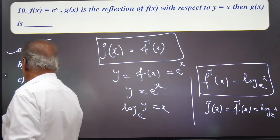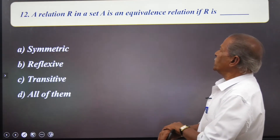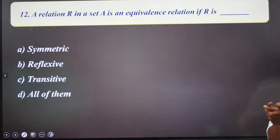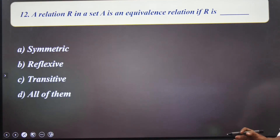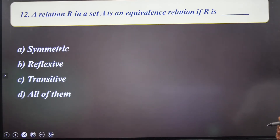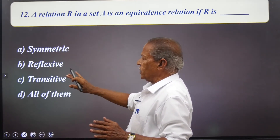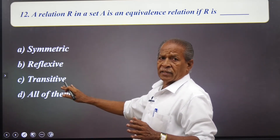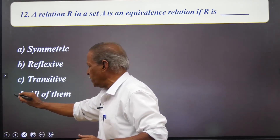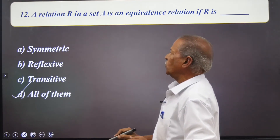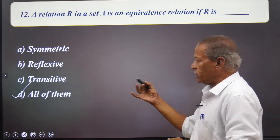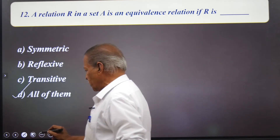A relation on a set is an equivalence relation if and only if it satisfies all three conditions: reflexive, symmetric, and transitive. Just being symmetric alone, or reflexive alone, or transitive alone is not sufficient. Option D is the correct answer.